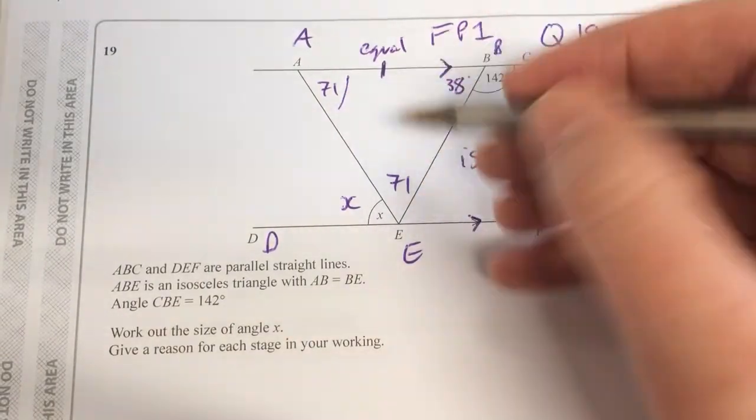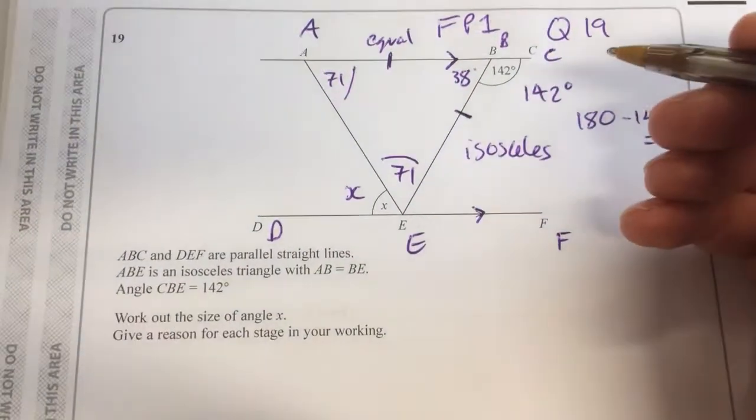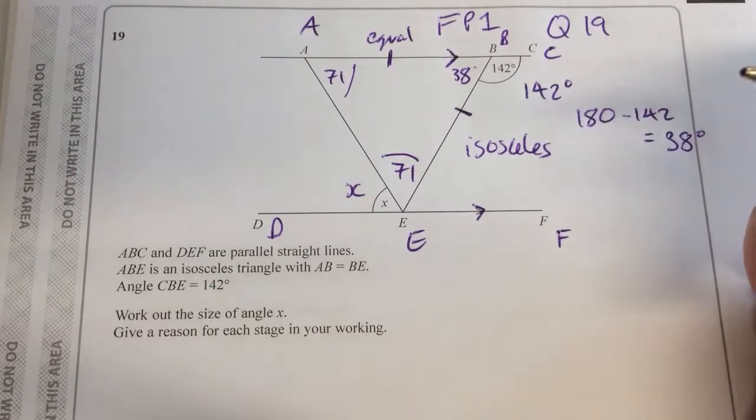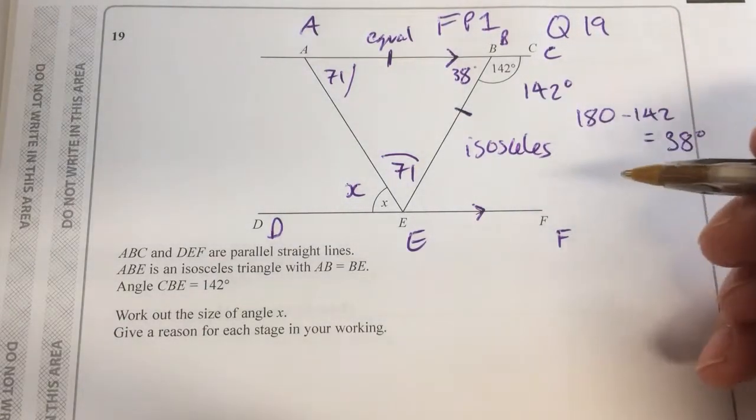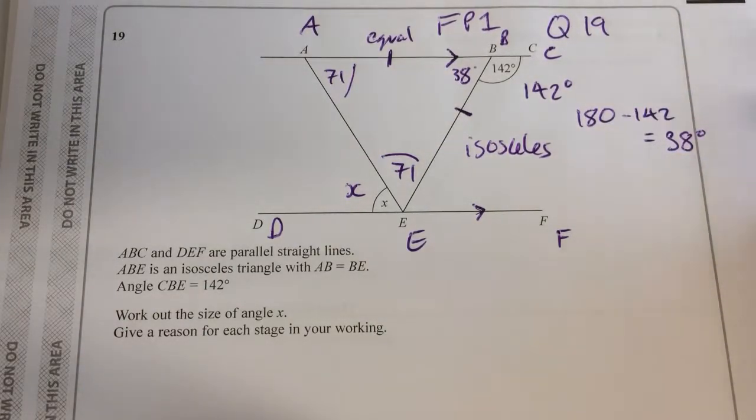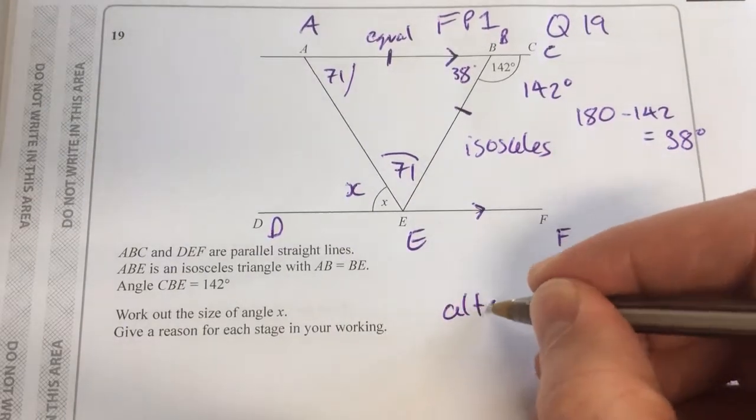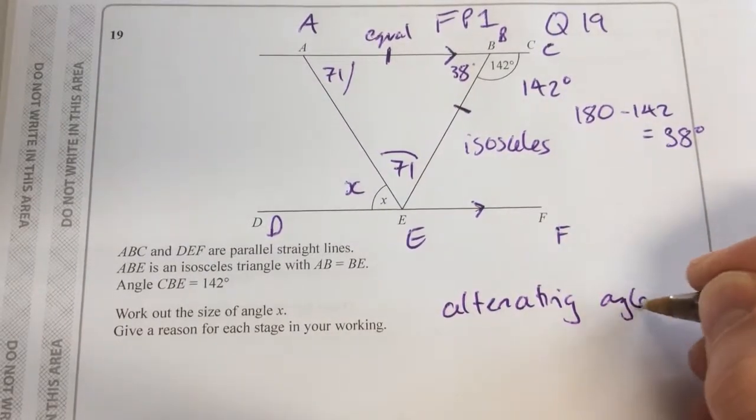So now I've got 71 there and there. Then what do I need to do to find X? Alternating angles. What are alternating angles? Z-shape. Do we call it a Z-shape? No, we call it alternating angles.